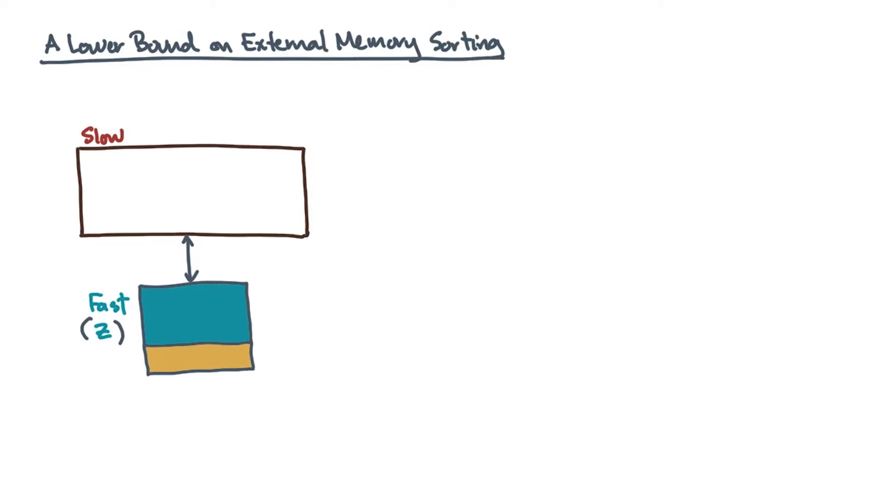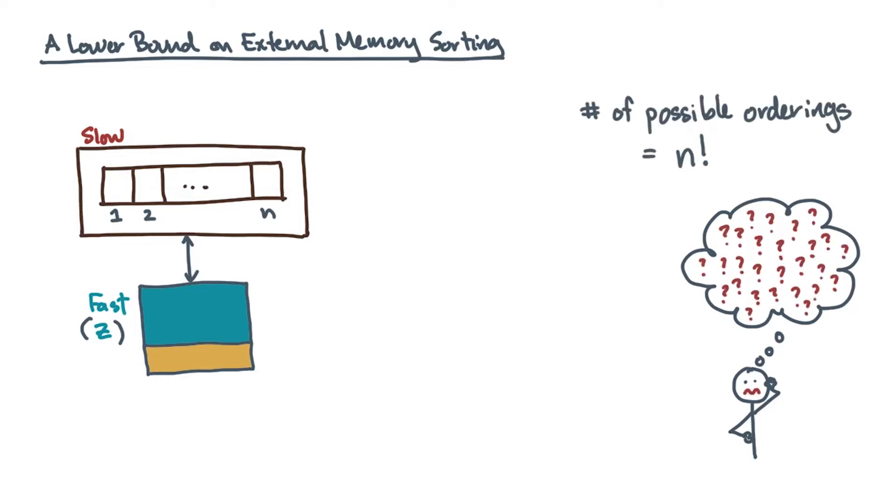You start with n items. And for simplicity, let's say that these items are unique. Initially, you haven't seen any of the items yet. So all you know is that there are n factorial possible ways in which you might order the data, right?